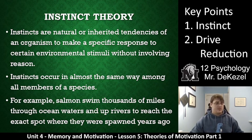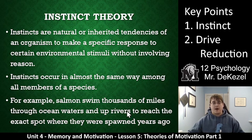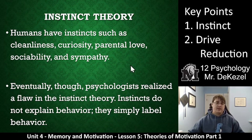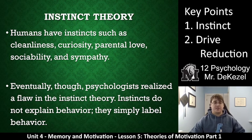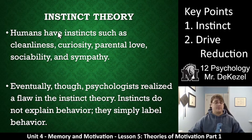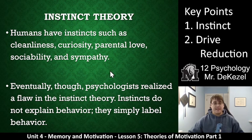An example would be salmon swimming thousands of miles through the ocean and up rivers to reach the exact spot where they were spawned. Humans have instincts too, such as the instinct to live in a clean environment, to be curious and want to learn, to care for our children, to be sociable since there's safety in numbers, and to be sympathetic since we might want that for ourselves. This is a theory about why we behave in these ways — because of our instincts.